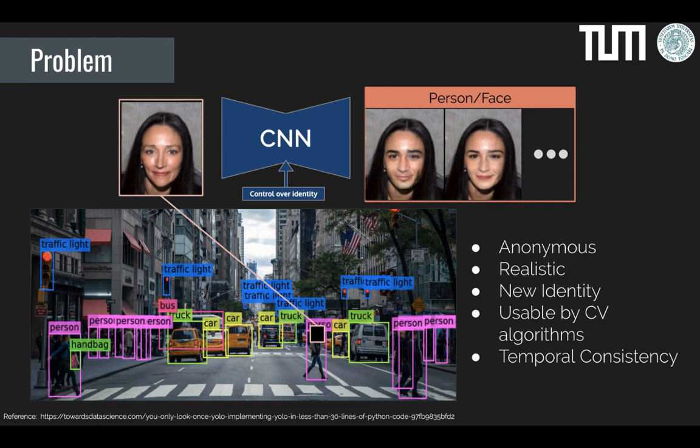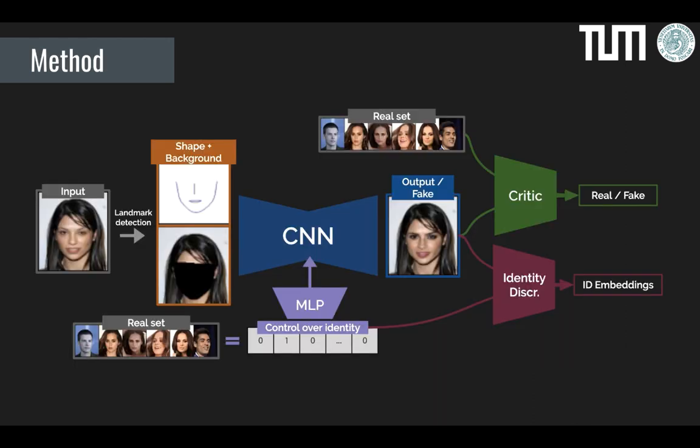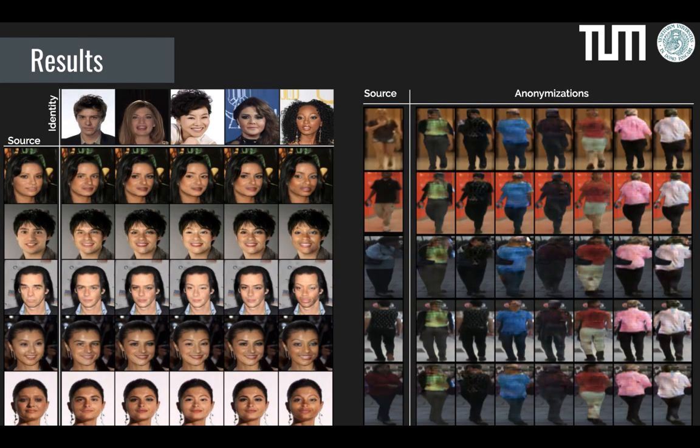The new image still needs to be recognizable as a face by computer vision algorithms, and needs to be anonymized consistently over time, so we can still track it without identity switches. Our method is based on an identity-controlled generative adversarial network that, given an input face, generates another face with different identifying characteristics. The new face will not be identified as anyone. For more details on the GAN that created these results, come and chat with us.